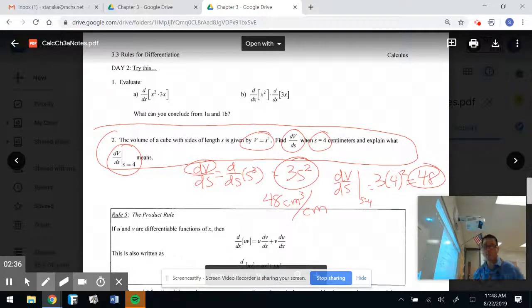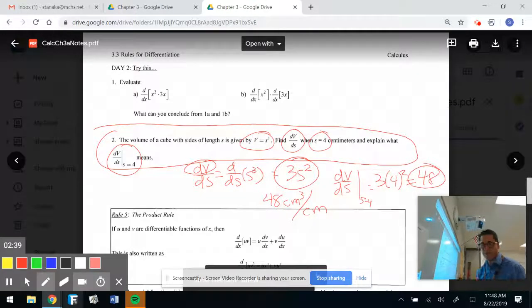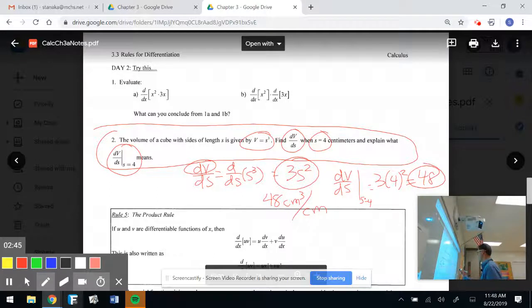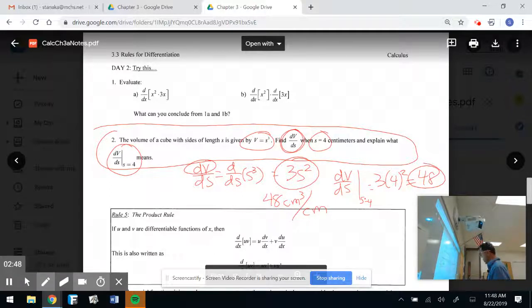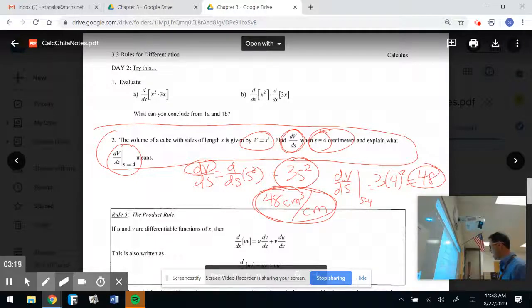All right, so what the heck does that mean? And I want you guys to write this down. I'm not going to write it all down there in case this pen goes off again. But the volume of the cube, remember, where a derivative is at rate is increasing at a rate of 48 cubic centimeters per centimeter. That's what it's increasing at in terms of when the side length is 4 centimeters. So, the volume of the cube is increasing at a rate of 48 cubic centimeters per centimeter when the side is 4 centimeters in length. Hit pause, take a look at that, just a little bit of a word problem and how we interpret it.